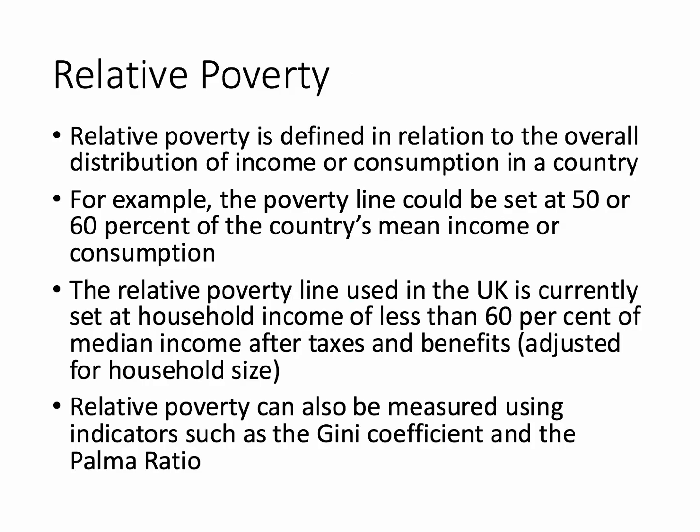What is relative poverty? Relative poverty is probably best defined in relation to the overall income distribution or consumption distribution within a country. So, for example, you could set your relative poverty line at 50% or 60% of a country's income. Where you set the line determines how many people would be counted as relatively poor. In the UK, the relative poverty line is officially set at household income after tax and benefits of less than 60% of median income, adjusted for household size.